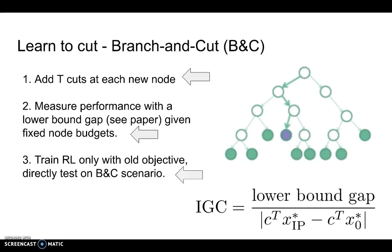We train an RL algorithm on the original objective, but only using cutting plane procedure without any branch and bound at all. And we directly test the performance on the branch and cut scenario.